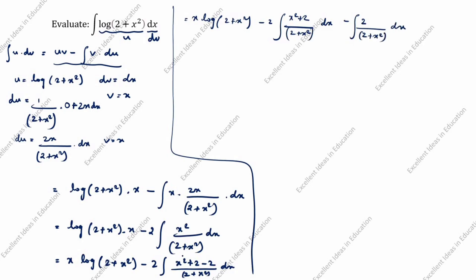We split this into two terms. The (x² + 2) and (2 + x²) cancel, leaving just 1. So we have x·log(2 + x²) minus 2 times integration of dx, minus 2 times integration of 2/(2 + x²) dx.